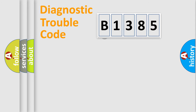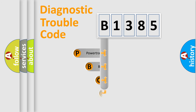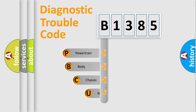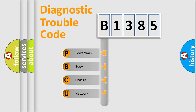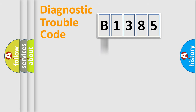Let's look at the history of diagnostic fault code composition according to the OBD2 protocol, which is unified for all automakers since 2000. We divide the electric system of an automobile into four basic units: Powertrain, Body, Chassis, and Network.